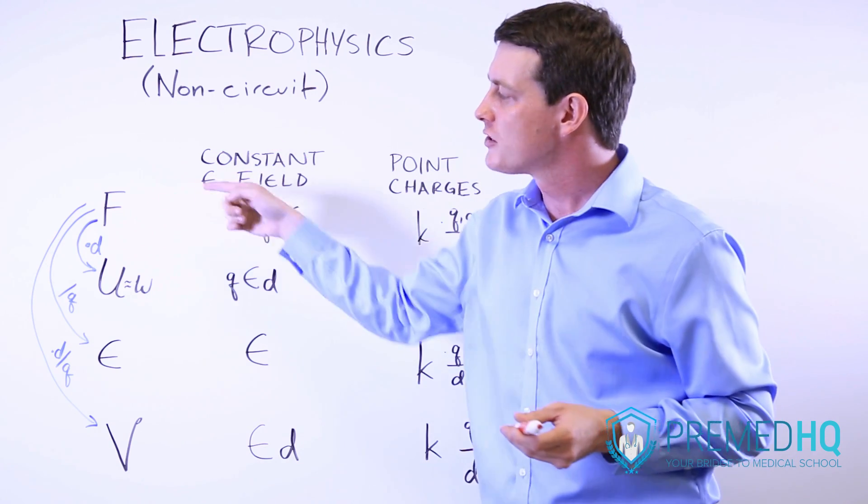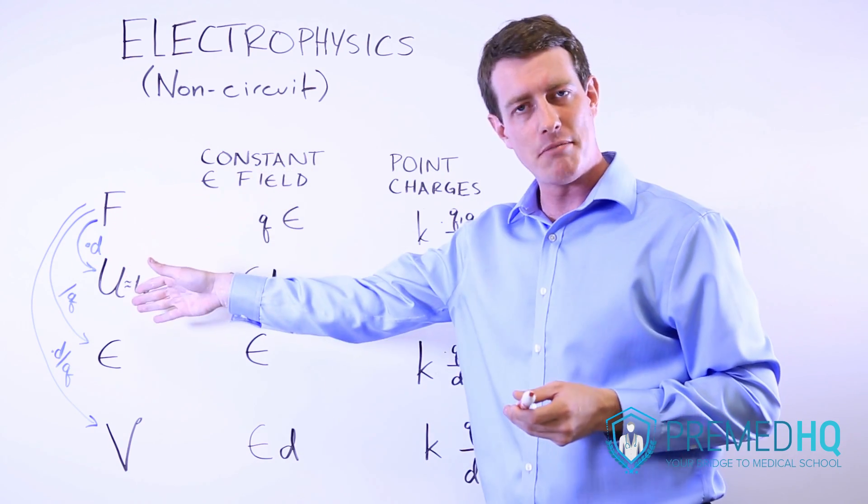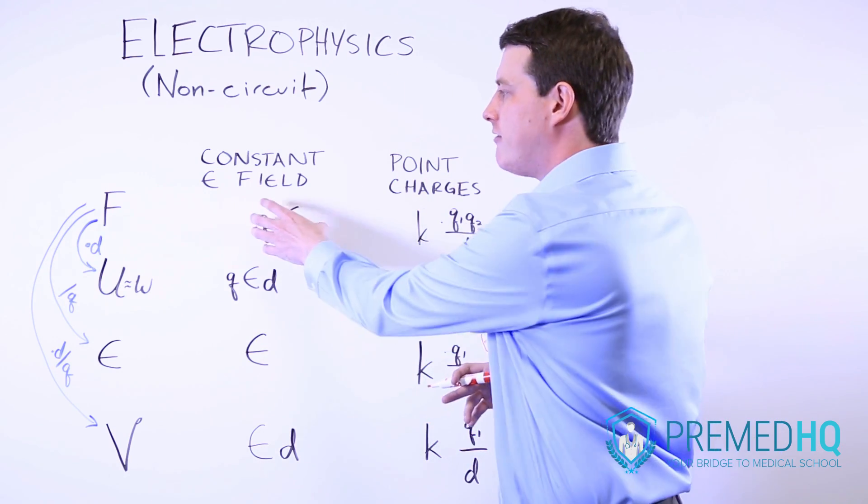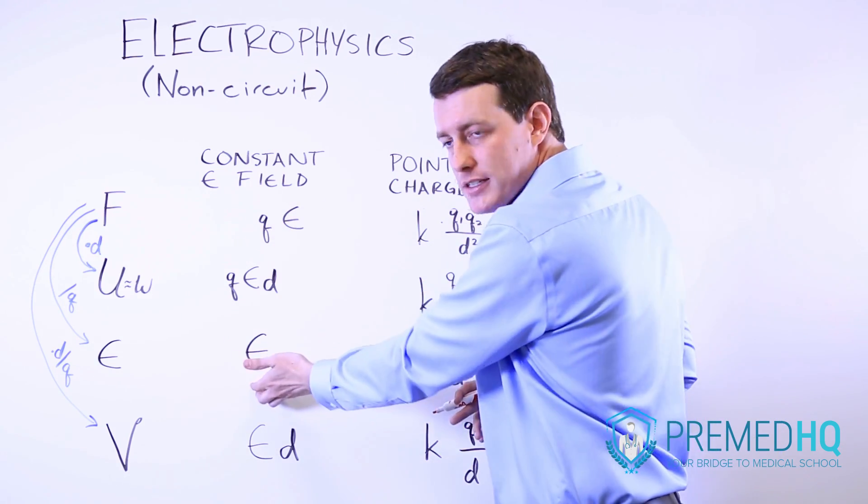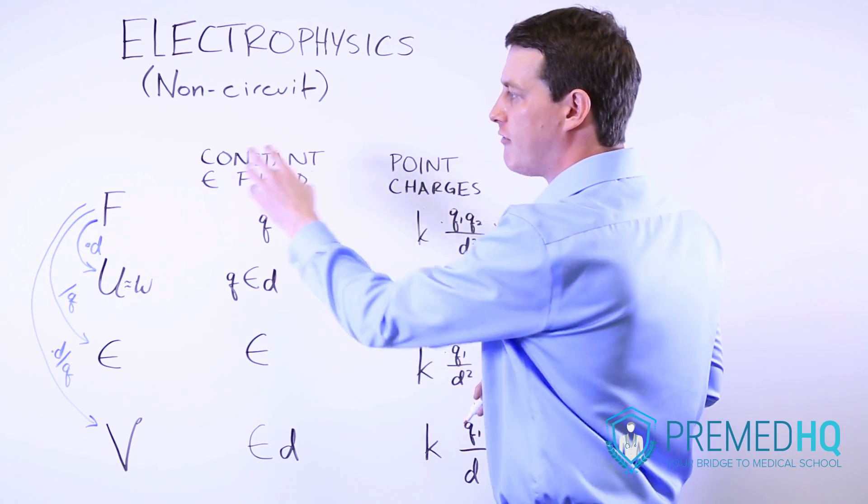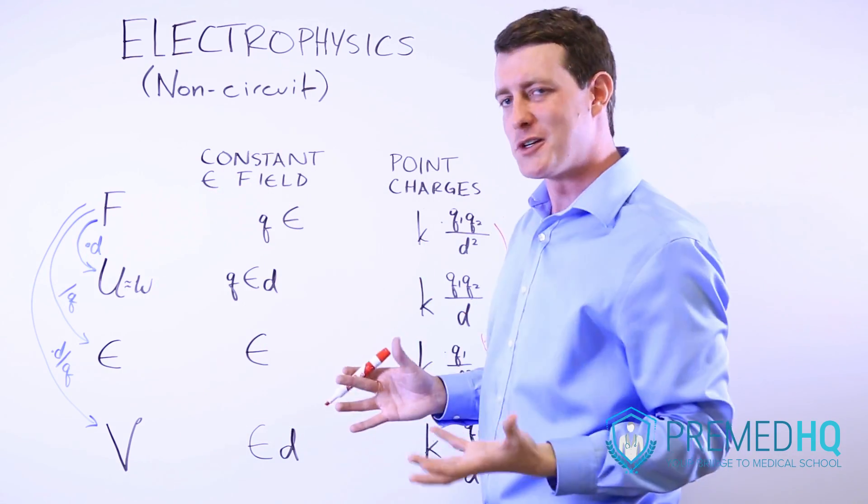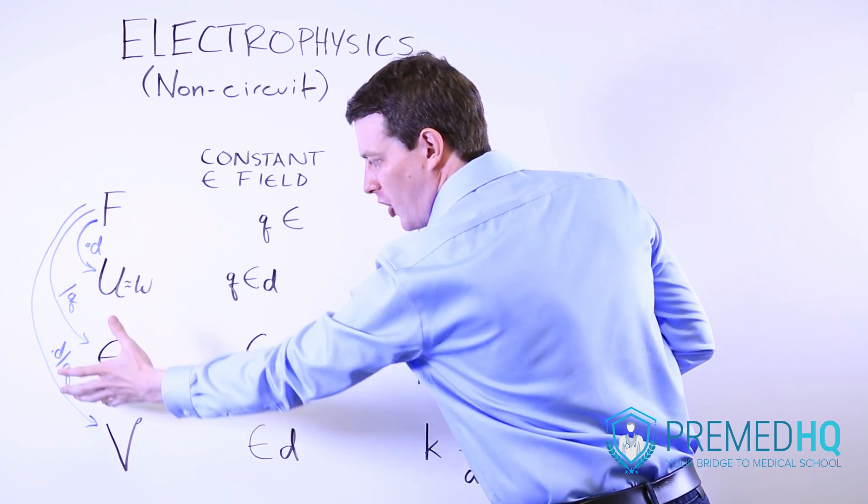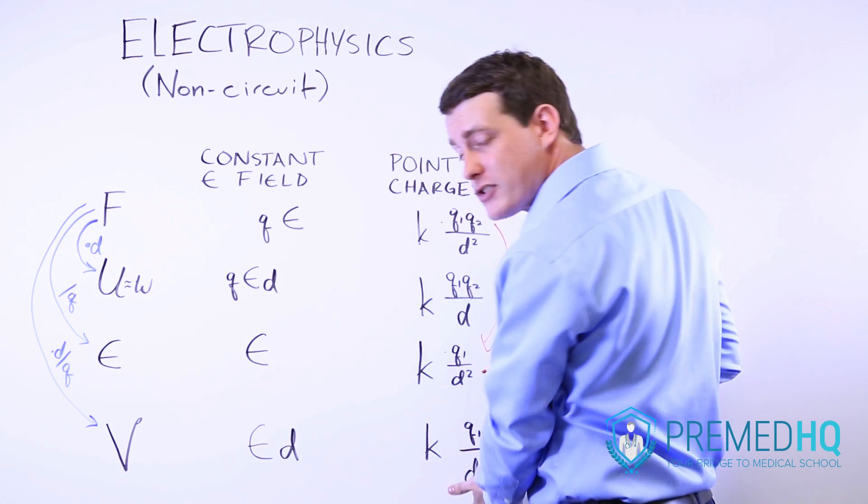To get from force to potential energy, you multiply by distance. To get from force to electric field, you divide this force formula by the subject charge. And you do the same over here. And to get from force to voltage, you do both of those adjustments. Multiply by distance, divide by charge, and you're left with the answers over here.